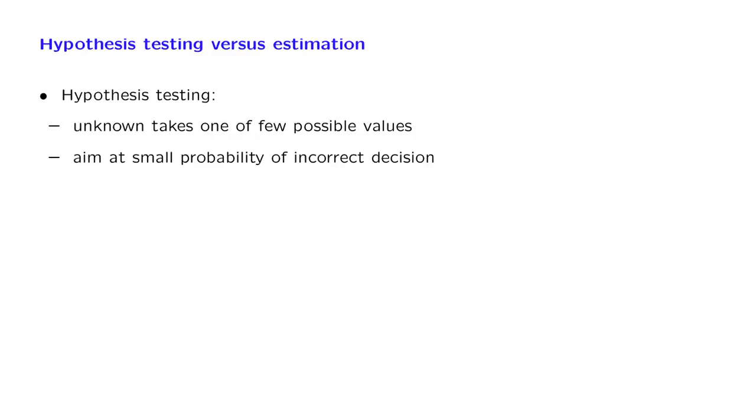We're going to decide in favor of one of the candidate models, and what we want to achieve is that we make a correct decision, or if not, we want to have a small probability of making an incorrect decision.